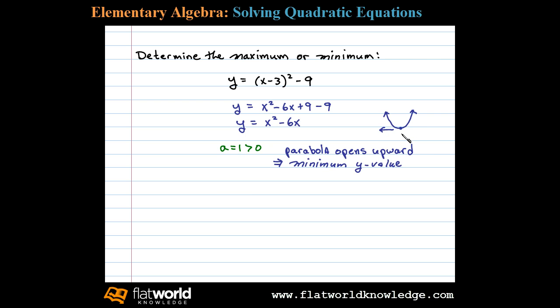Now to find that minimum y value, we first find the x value of the vertex, and we can do that using the formula negative b over 2a. In this case, a equals 1 and b equals negative 6.